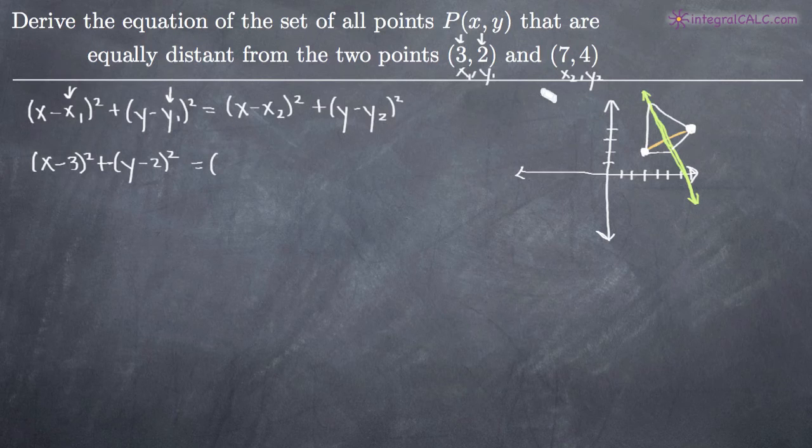Now we want to plug in the other point, (7,4), in for x and y over here. So (x-7)² + (y-4)². And now it's just a matter of solving this equation. We want to turn this into the equation of a line.